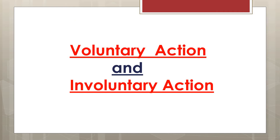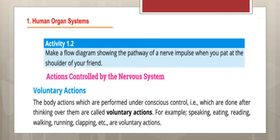Actions controlled by the nervous system consist of two main types: voluntary actions and involuntary actions. Voluntary actions are the body actions which are performed under conscious control — they are done after thinking over them.